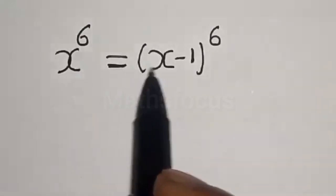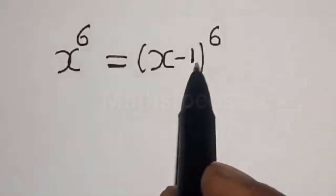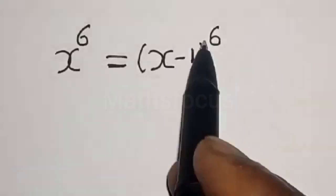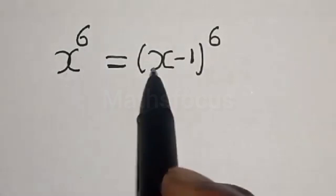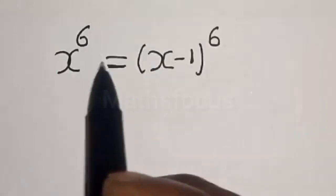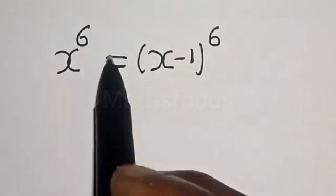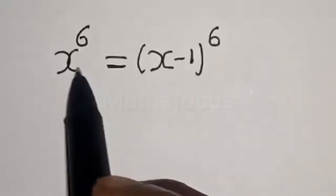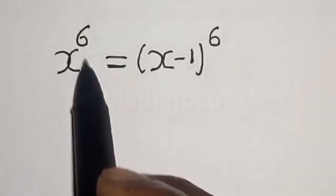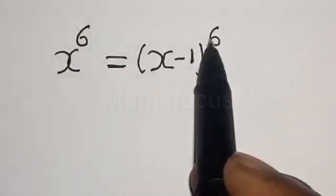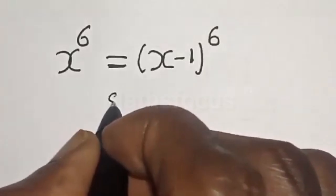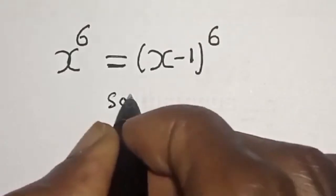x raised to power 6 is equal to x minus 1 raised to power of 6. I want to find the value of x from this given polynomial equation.